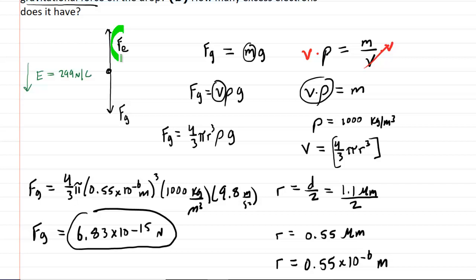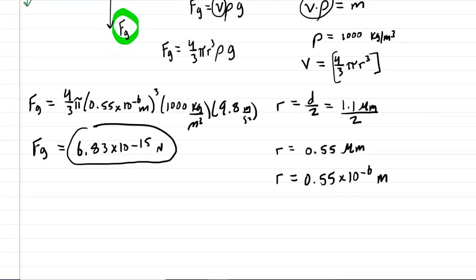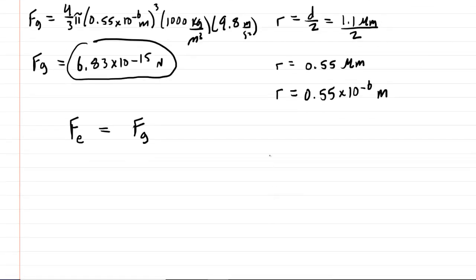So we can see that the upward electric force would be equal in magnitude to the downward gravitational force. So we can say that Fe is equal to Fg. We've learned in this chapter that the electric force magnitude is equal to the electric field magnitude times the magnitude of charge on the object. So we're going to make another substitution here. We're going to take the electric force and we're going to fill in electric field times charge.